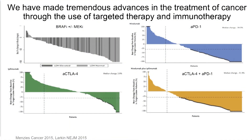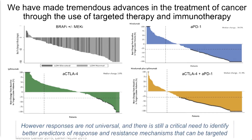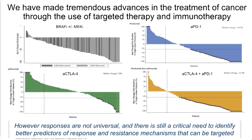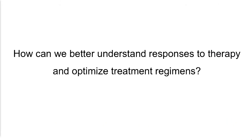We've certainly made tremendous advances in the treatment of cancer through the use of both targeted therapy as well as immunotherapy, and specifically immune checkpoint blockade. You can see from these waterfall plots — where the bars that go down mean that these tumors are shrinking — that a large number of patients actually benefit from these therapies. But we also know that responses aren't universal, and there's still a critical need to identify better predictors of response as well as resistance mechanisms. I've been focusing on this with my group for about a decade, working to better understand responses to therapy and to optimize different treatment regimens.